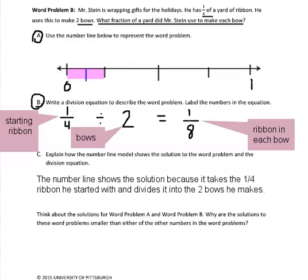The question at the bottom tells us to think about the solutions for word problem A, which we did on Monday, and word problem B that we did today. Why are the solutions to these word problems smaller than either of the other numbers in the word problem?